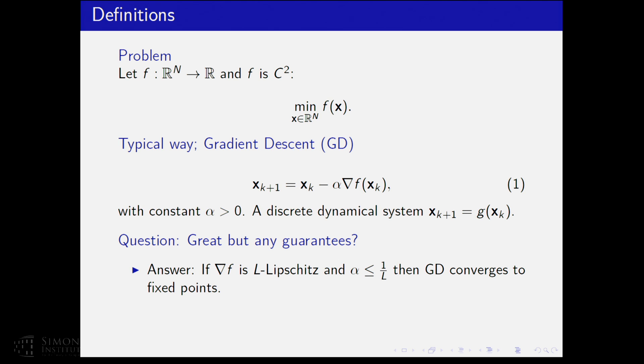This is not basically a heuristic because under some assumptions, we have some guarantees. So if the gradient of your function f is L-Lipschitz with some constant L and alpha, the step size, is small enough, gradient descent converges to fixed points. A fixed point of a dynamical system is a point that remains invariant under the update rule of the dynamical system.